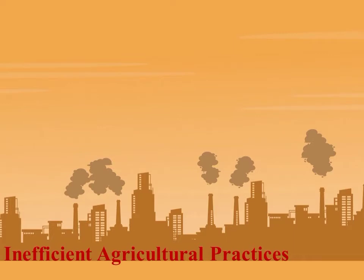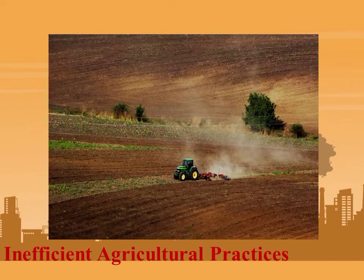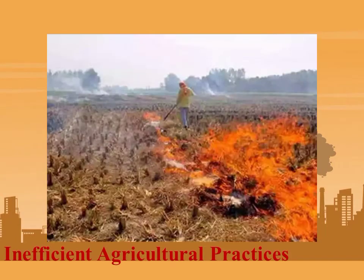The next cause is inefficient agricultural practices. When we use different machinery it burns fuels like oil, releasing a certain amount of harmful gases into the environment. Also, when we burn the field after harvesting — جب ہم فصل کو کاٹنے کے بعد اس کو آگ لگاتے ہیں تاکہ اگلی فصل اگا سکیں — تو بہت سارا دھواں اور harmful gases environment کے اندر release ہوتی ہیں اور air کو pollute کرتی ہیں۔